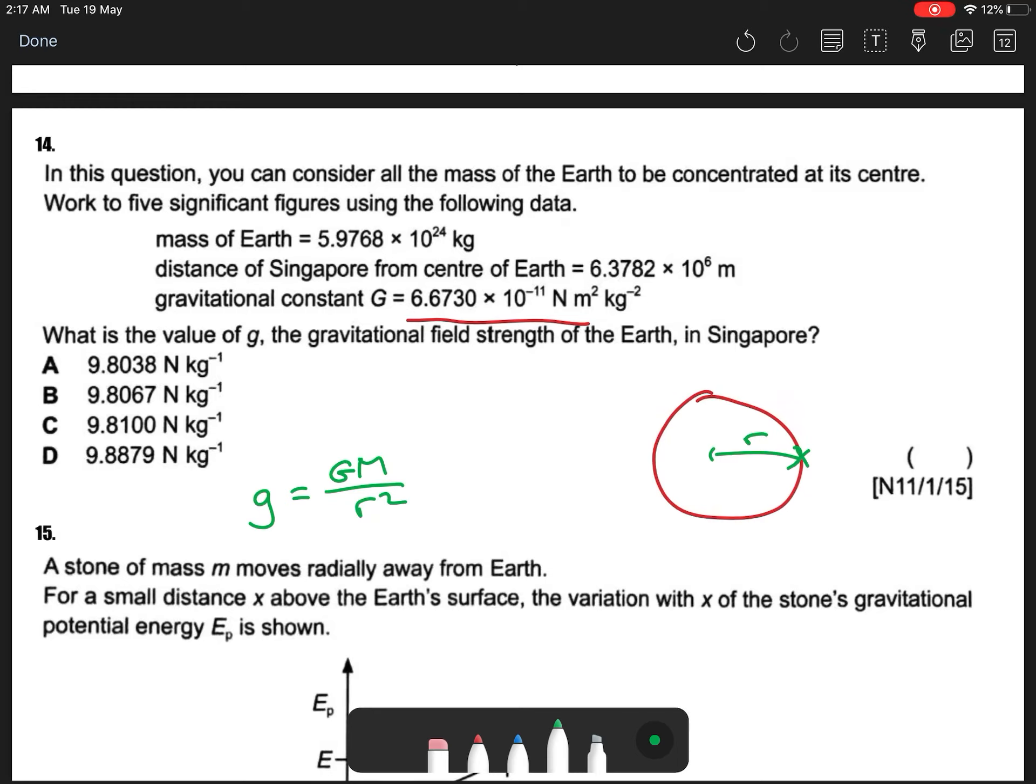Times your mass of Earth, 5.9768 times 10 to the 24. Okay, divide by your distance squared. Okay, so you will get 6.378 times 6.378 times 10 to the 6 squared.